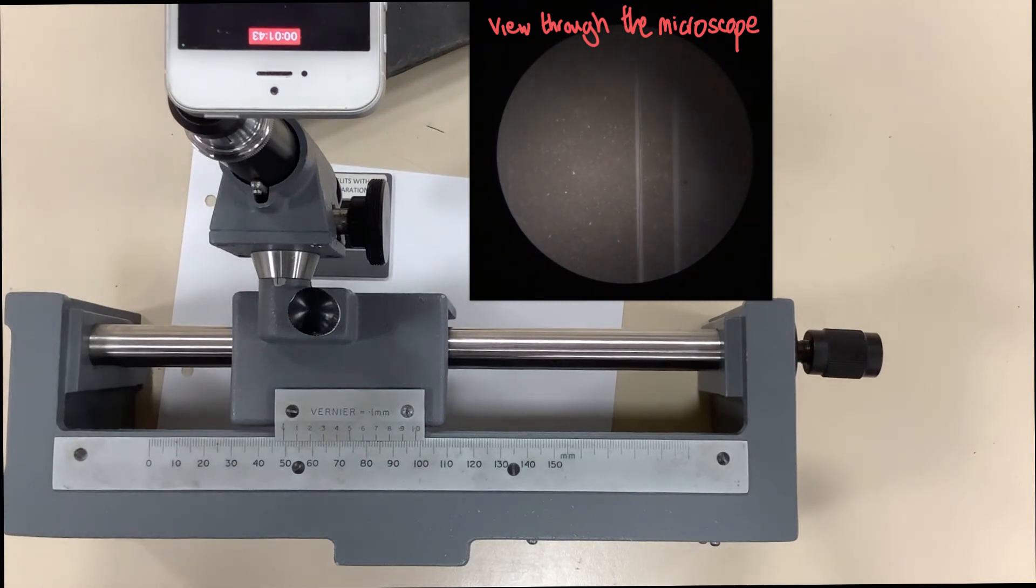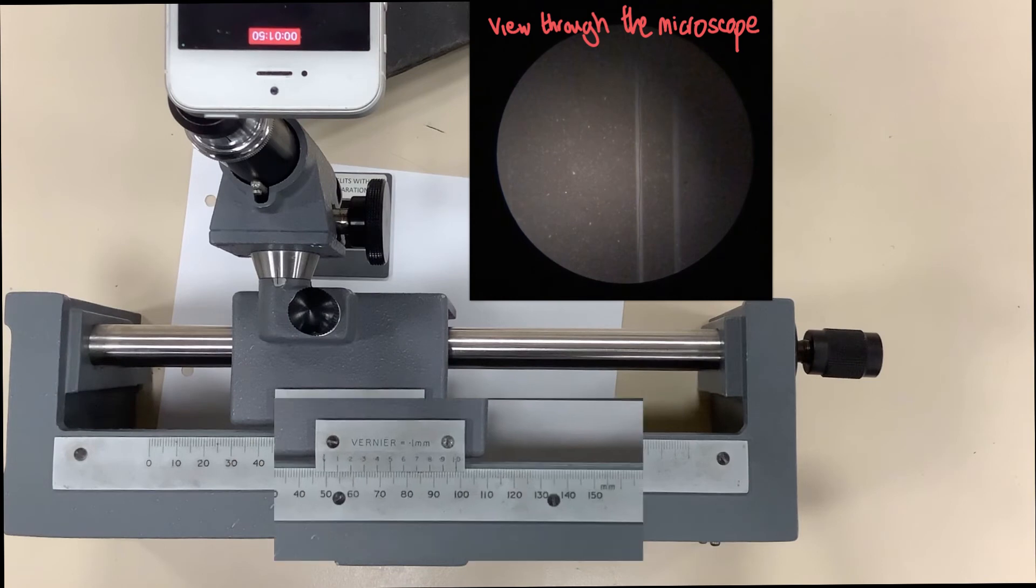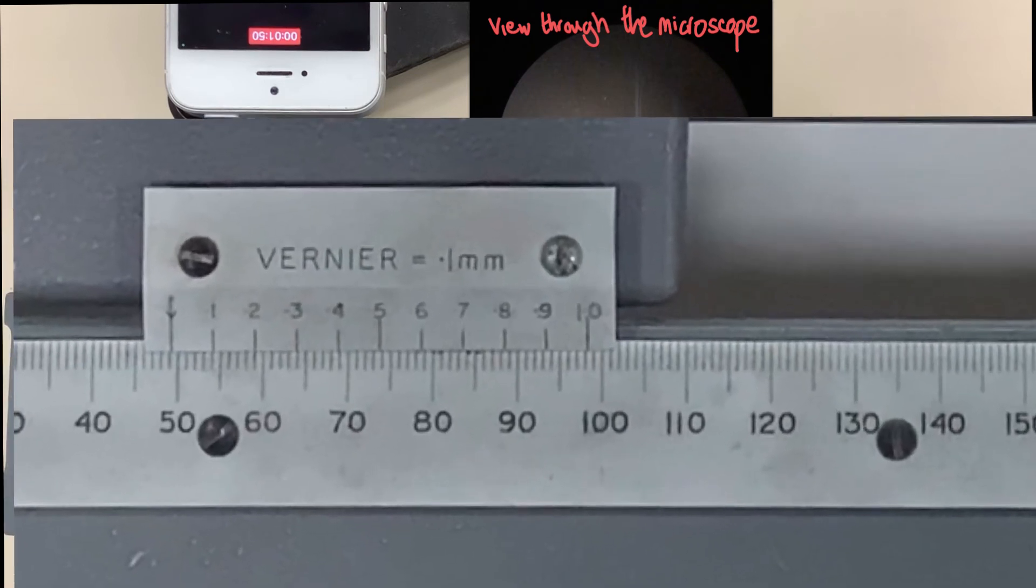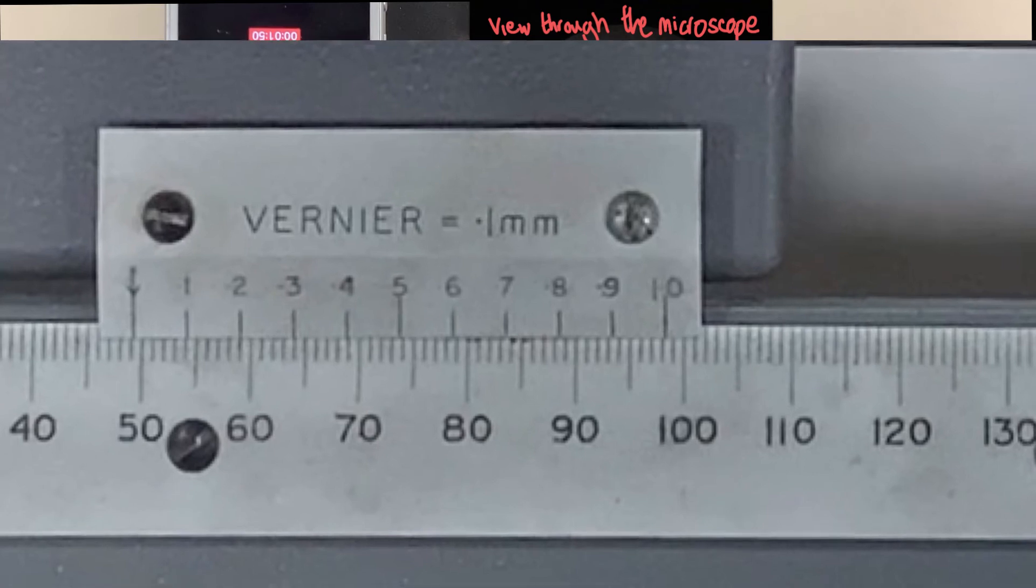And there we are. Then it's lined up with the second slit and now we'd need to read that vernier scale again. Once again let's zoom in on that vernier scale to give you a chance to work out what you think it is now reading. Pause the video and work out what you think the slit separation is from those two vernier readings. Then continue with the video.